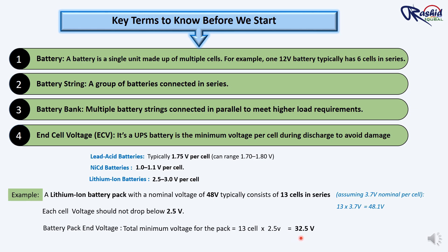Why does this matter? If the voltage of the entire pack drops below 32.5V, it means that one or more cells have discharged below the safe limit of 2.5V. Discharging below this limit can damage the cells, reducing their capacity, efficiency, and overall lifespan.